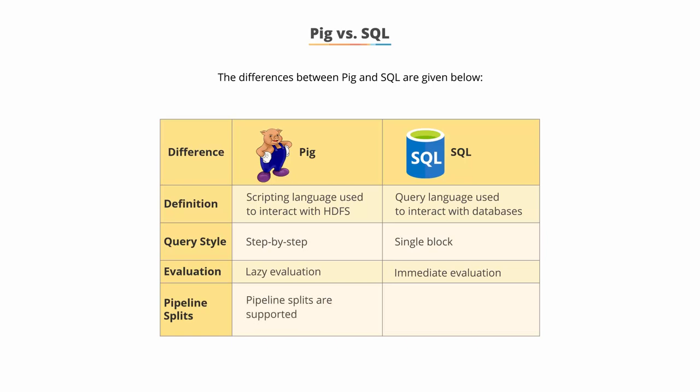Pipeline splits are supported in Pig. However, in SQL, you may need to run the join command twice for the result to be materialized as an intermediate result.